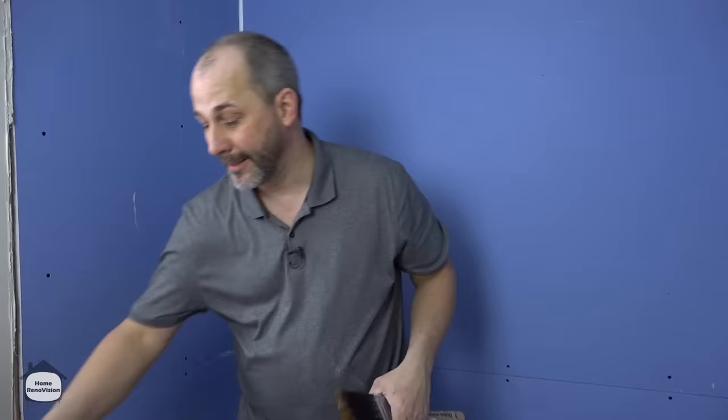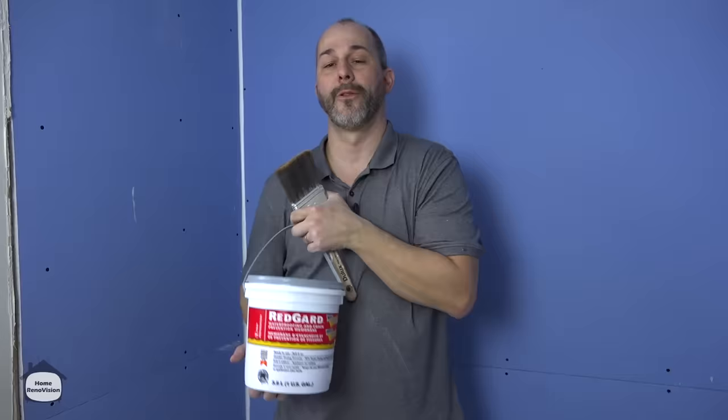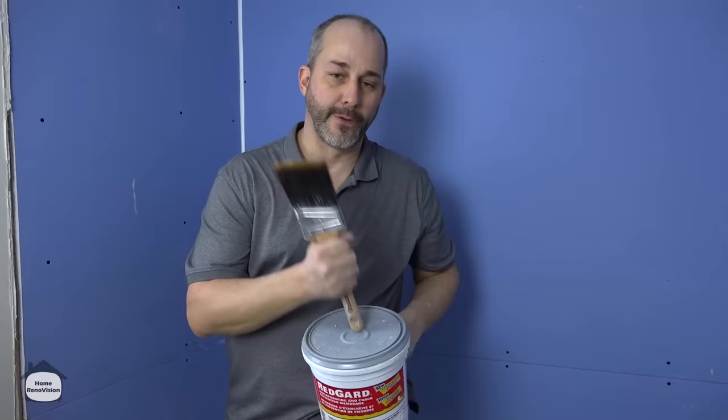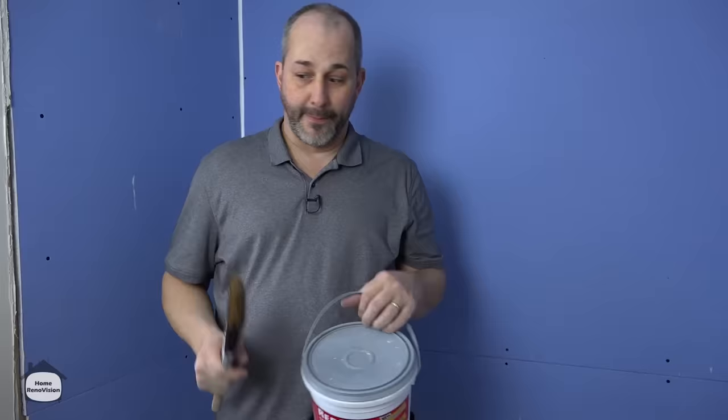So now we have walls that are all sealed up. Fabulous! The way we're going to finish that, of course we're going to use a roll-on membrane. Now there is more than one membrane out there. There's a Mapei product called Aqua Defense and that's a nice product. We have that in one of our project videos but today we're going to talk about RedGard. This is great, it's in your local building store so you don't have to go hunting to find it.